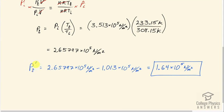So we take this answer, subtract away atmospheric pressure, and we get 1.64 times 10 to the 5 newtons per square meter is the new gauge pressure at minus 40 degrees Celsius.